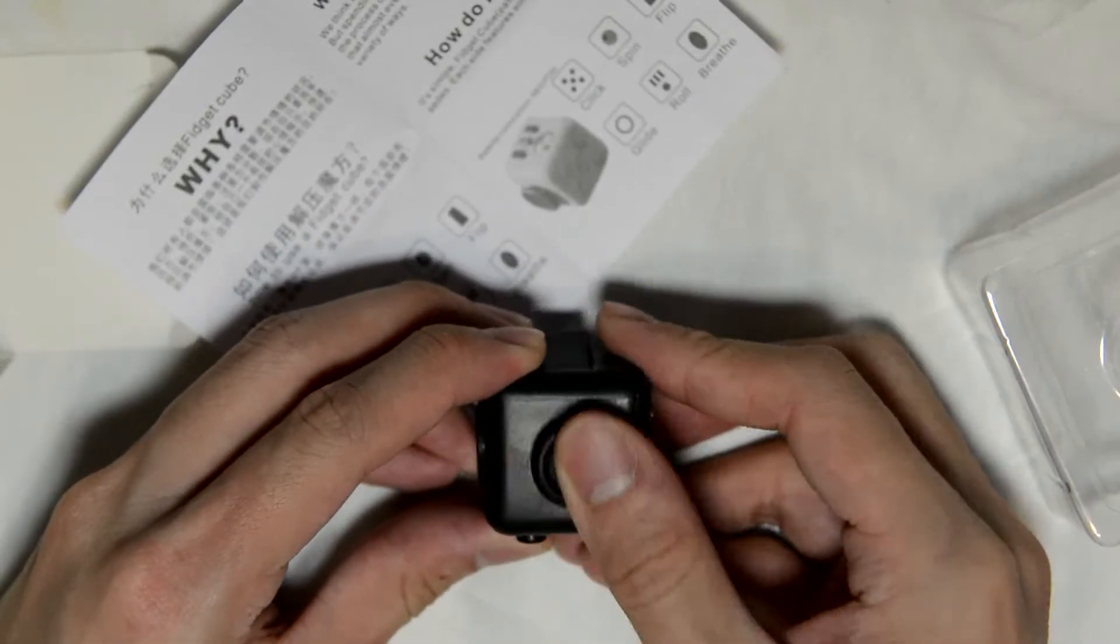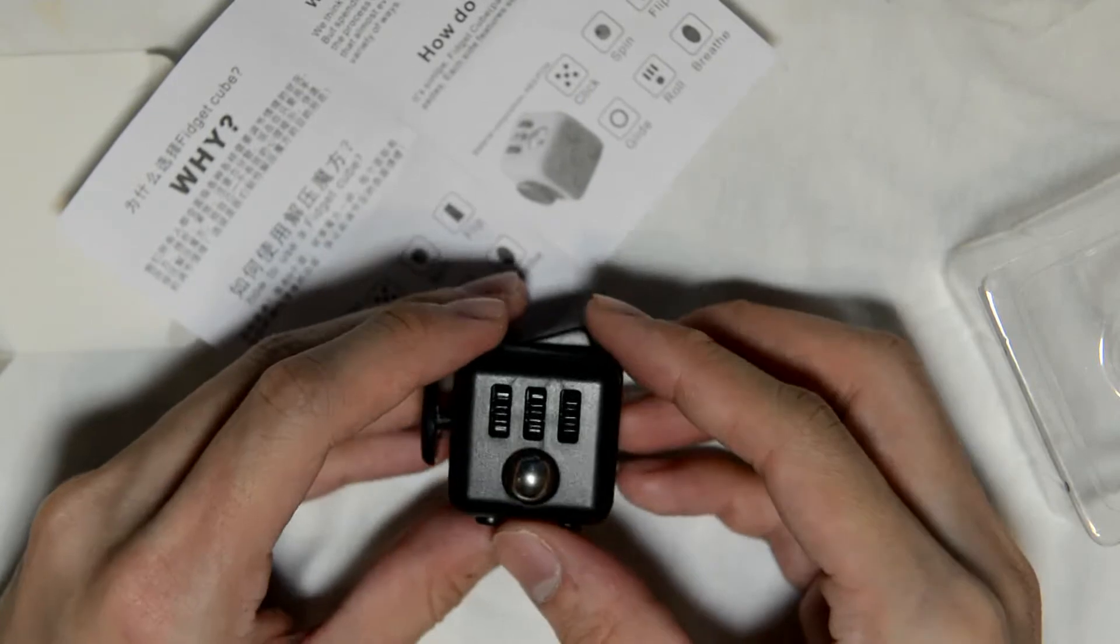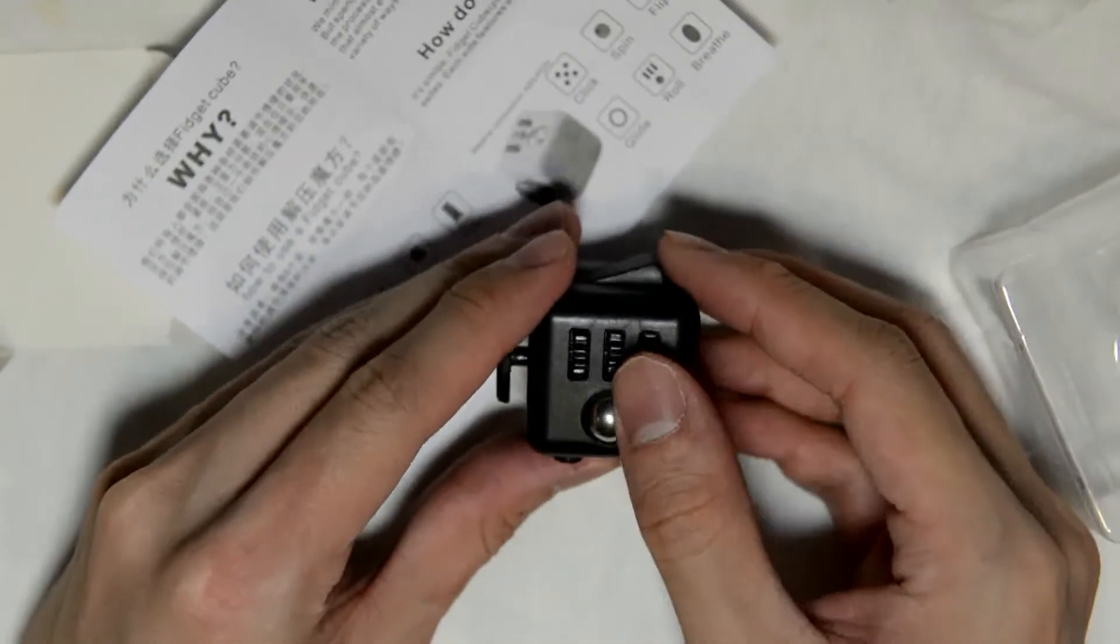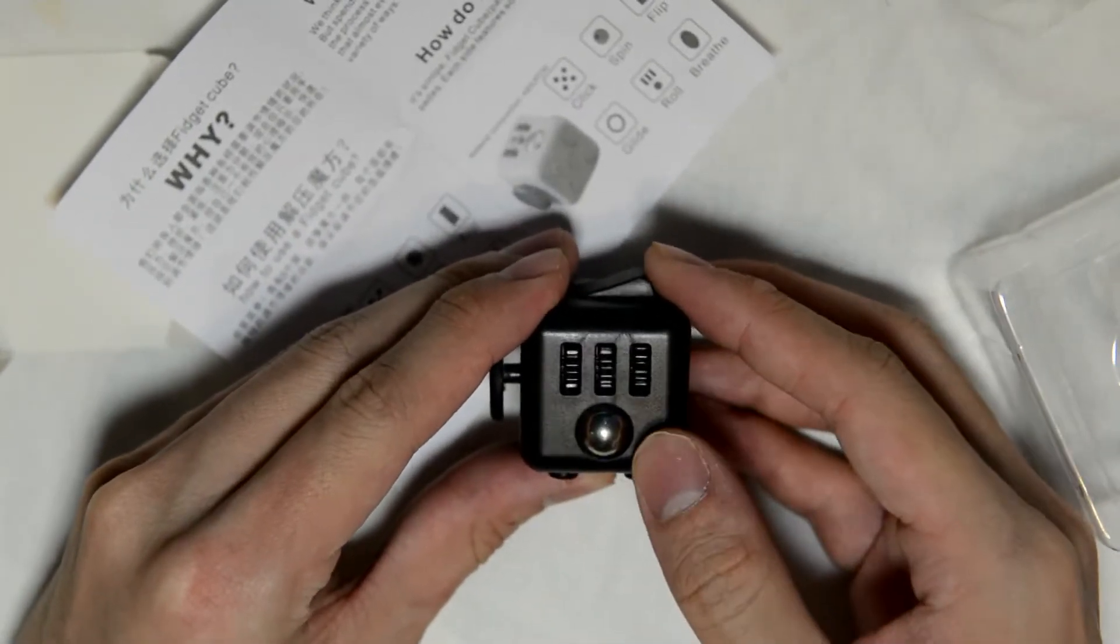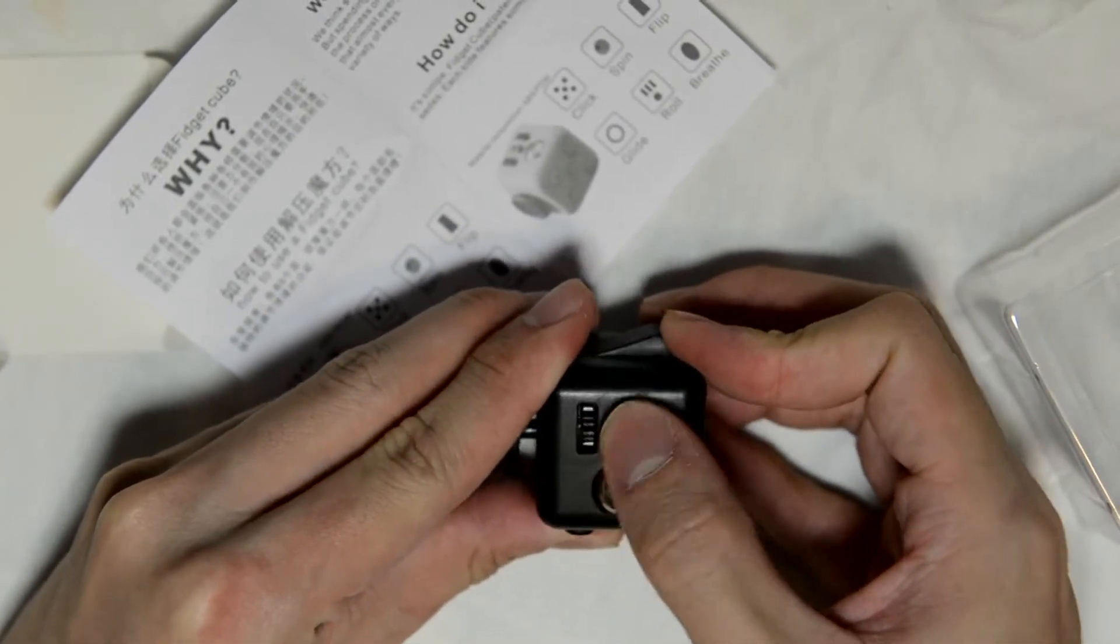So this, the first one, this is something like an analog stick, so you can play around with that. Then we have the roller thing as well, so you can roll, or you can, yeah, you can, okay.